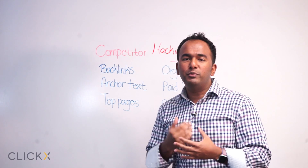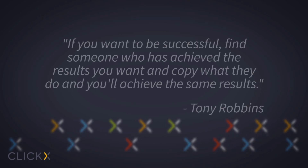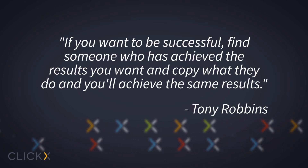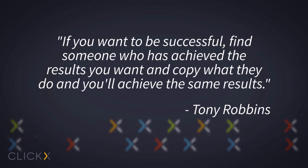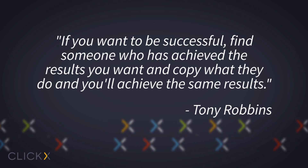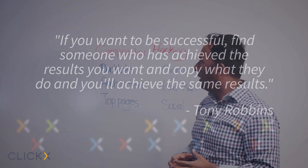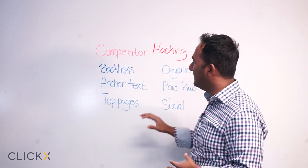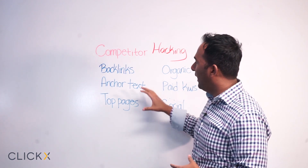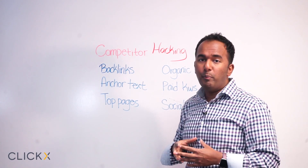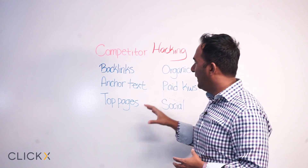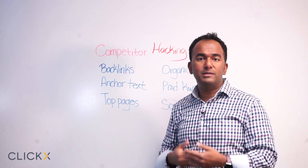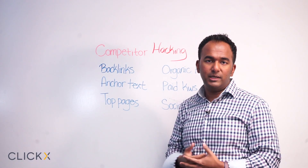I have a quote from Tony Robbins that goes: if you want to achieve success, all you have to do is find a way to model those who have succeeded already. What I usually do when I'm looking at competitors is to find out what are some important things that I should be looking at and how these things play into their current success.